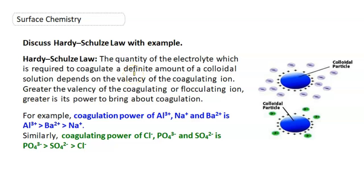This Hardy-Schulze rule says that the quantity of the electrolyte which is required to coagulate a definite amount of a colloidal solution depends on the valency of the coagulating ion.